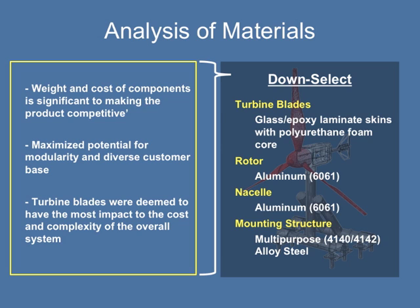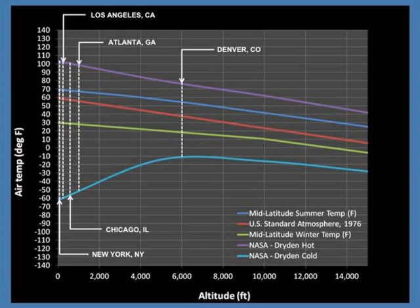A materials analysis matrix was created to compare materials and down-select specific choices. The chart shown plots temperature versus altitude for numerous atmospheres: mid-latitude summer, US standard atmosphere, mid-latitude winter, and NASA Dryden data for hot and cold days. The altitude of five major US cities were mapped onto the temperature versus altitude curves. According to the data, Atlanta may be subjected to low temperatures of around -50°F and high temperatures of around 105°F.